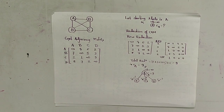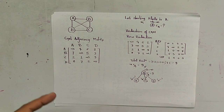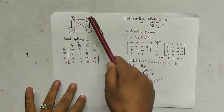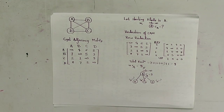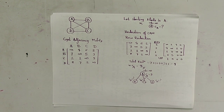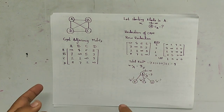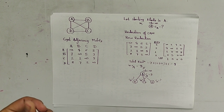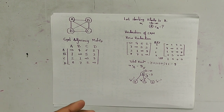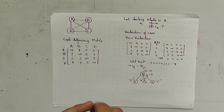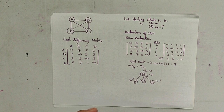Namaste. Today in this video we are going to solve the Traveling Salesman Problem using the Branch and Bound method. Branch and Bound can be basically classified in two types: FIFO (First In First Out) and LCS (Least Cost).